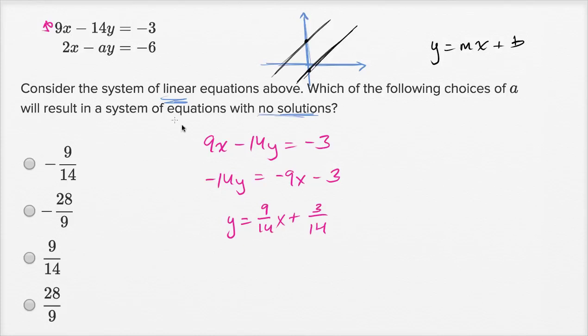So that's this line written in slope-intercept form. Now let me write the second line in slope-intercept form. So I get, I have 2x minus ay is equal to negative six. And let's see if I subtract 2 from both sides,